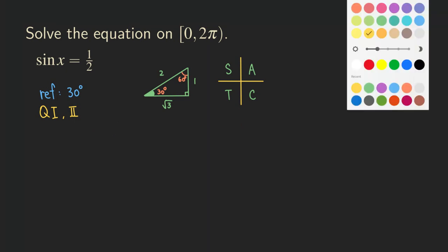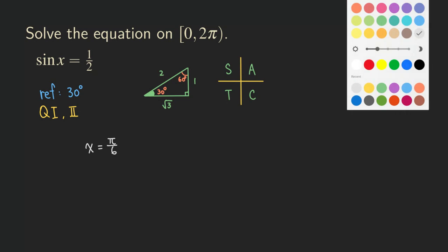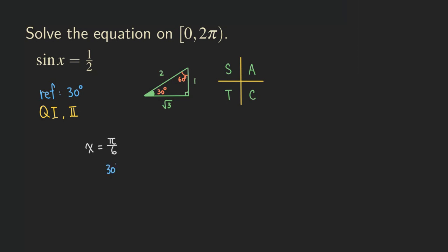With our reference angle established, we can write down the corresponding angles in the first and second quadrants. The solution in the first quadrant — an angle with a reference angle of 30 degrees — is the same as 30 degrees, which in radians is π/6.